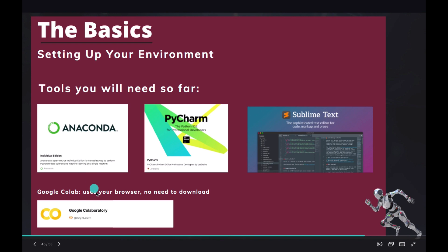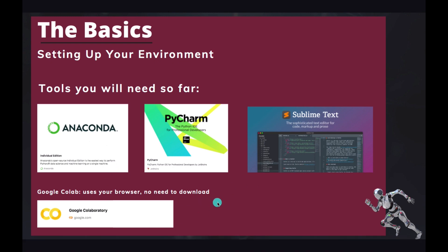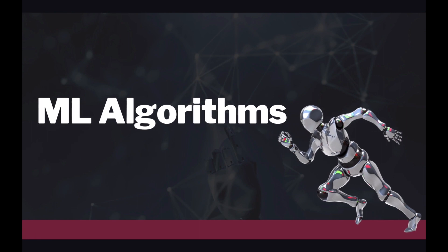So those are the two tools we'll use for now. Later, when we get to the deployment part, we're going to download PyCharm and Sublime Text. For now, just keep Anaconda and Google Colab ready. In the next tutorial, we're going to start with ML algorithms — that's the most exciting part of this course. We'll start by learning the intuition and mathematics behind them, then go to the lab and see how they're implemented in the industry.